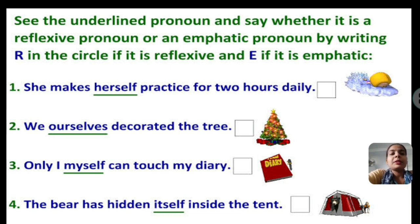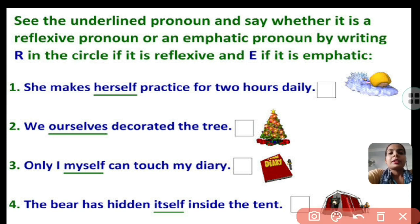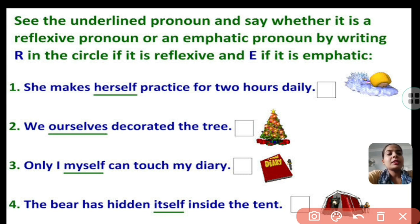The first one: she makes herself practice for two hours a day. So here, she makes herself practice. Herself is a reflexive pronoun because the subject of the verb is the same as the object of the verb. So it is reflexive pronoun.